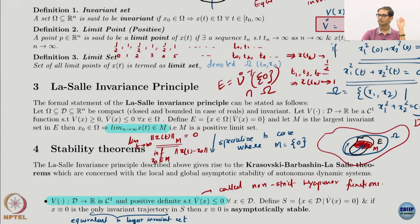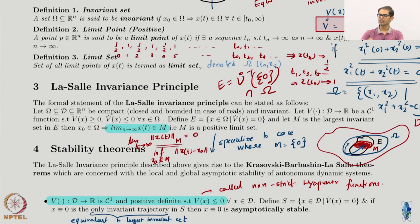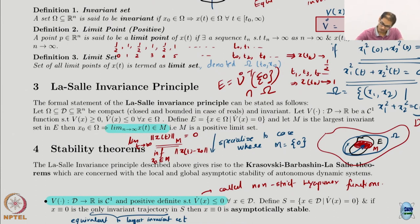Write these down in your notebooks and memorize them: inverse image of a closed set is closed under a continuous function; inverse image of an open set is open under a continuous function; a closed set contains its supremum and all limit points; finite sets with finite elements are always closed. These are key facts — memorize them. Nobody is asking you to prove them — it is not an analysis class. So E is closed.